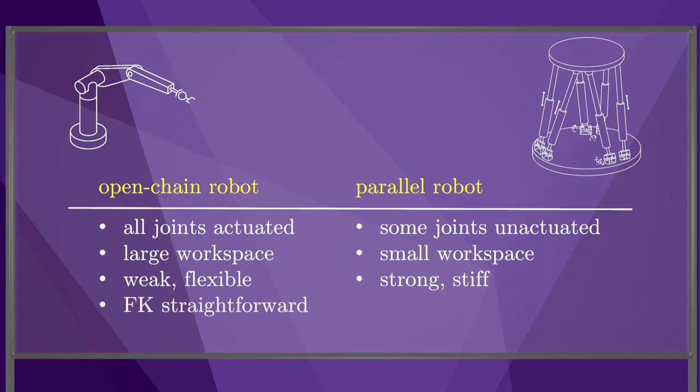As we saw in Chapter 4, the forward kinematics mapping joint values to end effector configurations is relatively easy to evaluate for open chain robots using the product of exponentials. On the other hand, there may be multiple solutions to the forward kinematics for parallel robots, and finding them can be challenging.